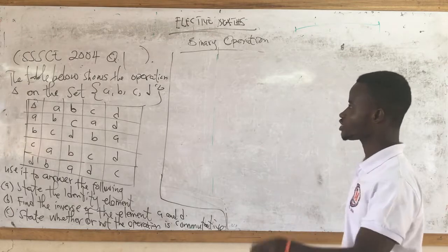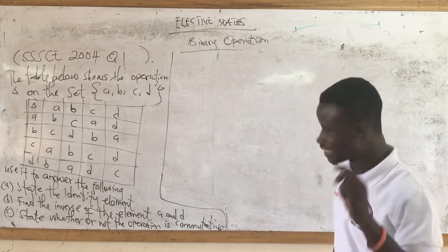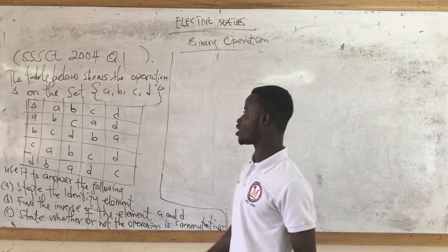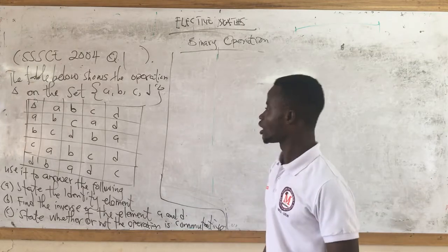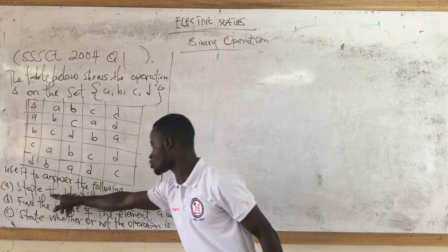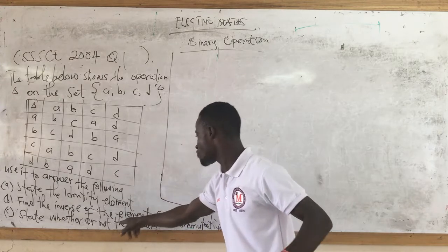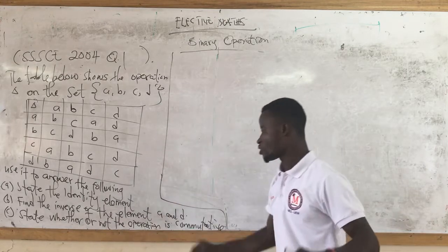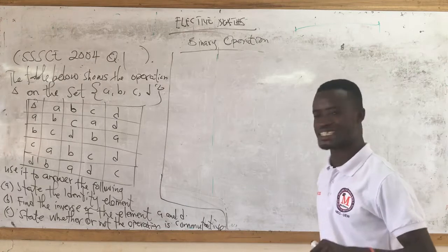The table below shows the operation data on the set {A, B, C, D}. There is a table here — make sure you study the table very well. We're going to do a lot of investigations on it. Use it to answer the following: (a) state the identity element, (b) find the inverse of elements A and B, (c) state whether or not the operation is commutative.